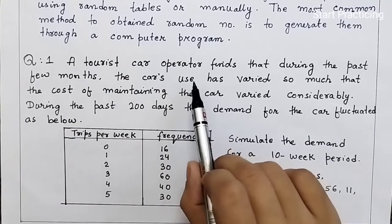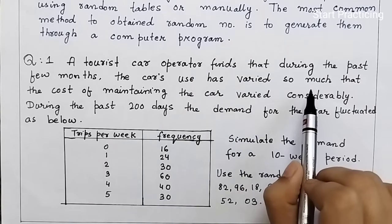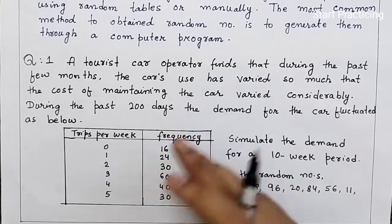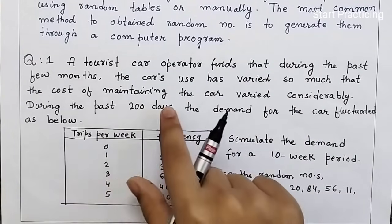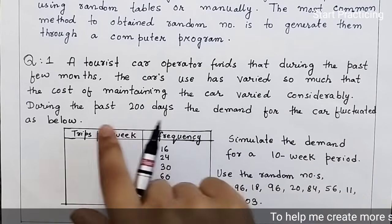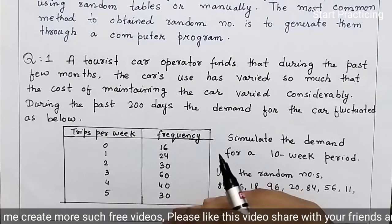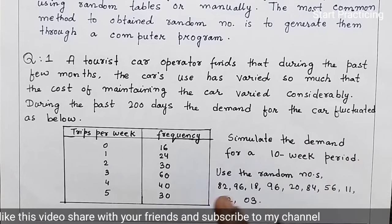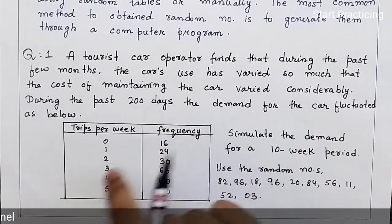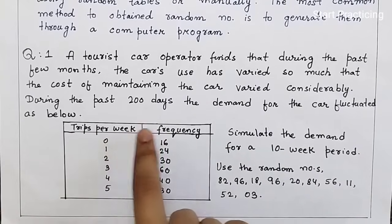A tourist car operator finds that during the past few months the car use has varied so much that the cost of maintaining the car varied considerably. So if the car use varies, the cost of maintenance will vary. During the past 200 days, the demand for the car fluctuated as shown below.